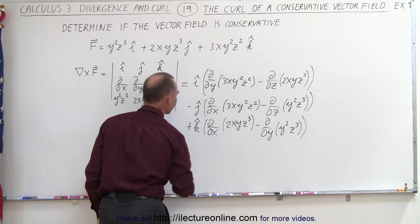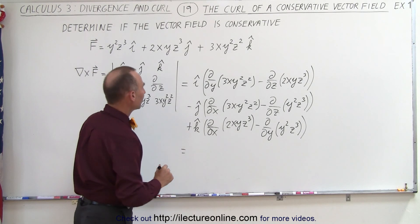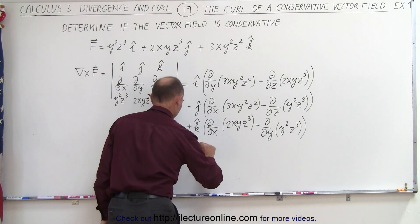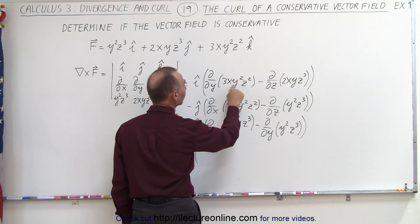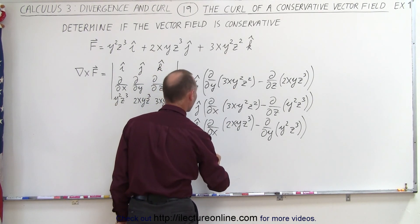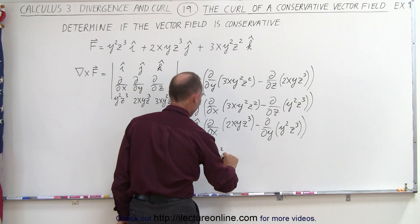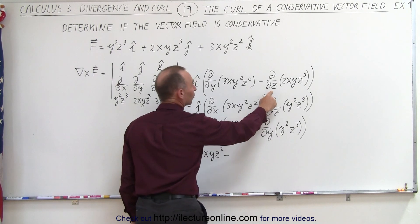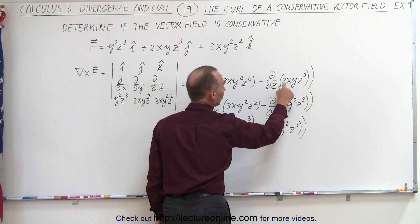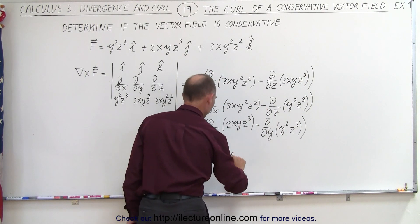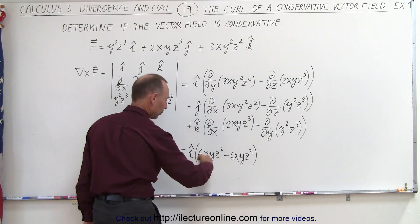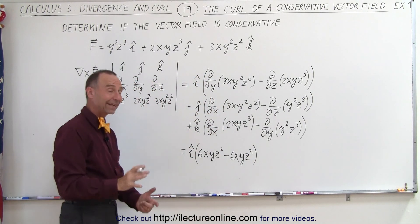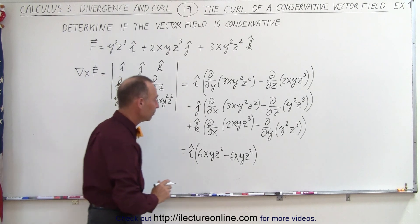Let's see what we get. In the i direction, the partial with respect to y gives 6xyz², and the partial with respect to z also gives 6xyz². Those are equal to each other — they cancel out, so there is no i component.